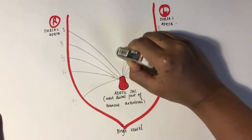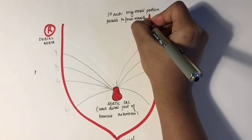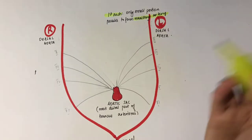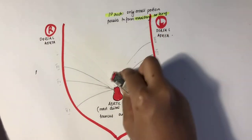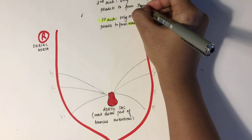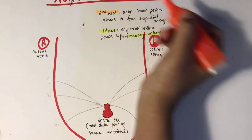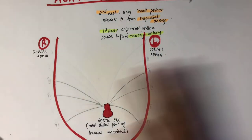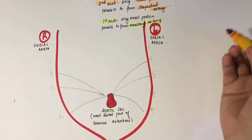The first arch disappears, but a very small portion persists to form the maxillary artery. The second arch also disappears, and the small remaining portion forms the stapedial artery. So: the first arch forms the maxillary artery, and the second arch forms the stapedial artery.